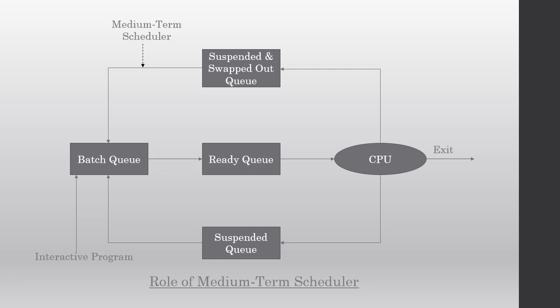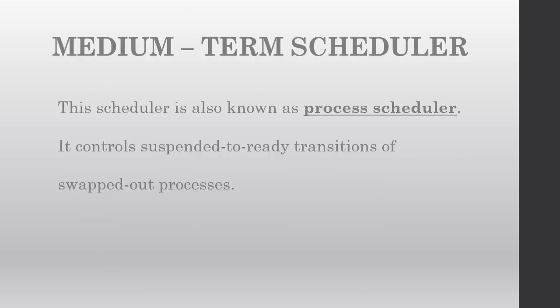Now let us see the function of the medium term scheduler. We have already seen that the long term scheduler functions between the batch queue and the ready queue, and the short term scheduler functions between the ready queue and the CPU. So what does the medium term scheduler do? Basically, it handles swept-out processes. Medium term schedulers, also called process schedulers, control the suspended-to-ready transitions, i.e., swept-out processes. Medium term scheduling is an important part of swapping.